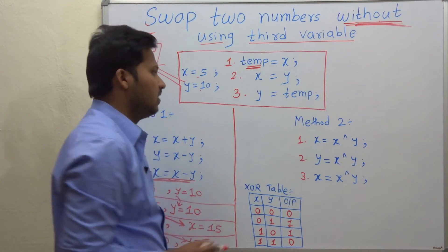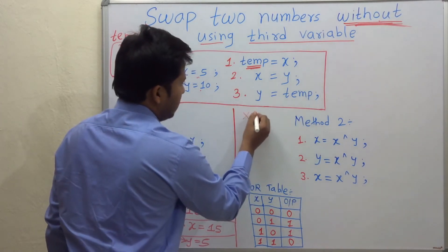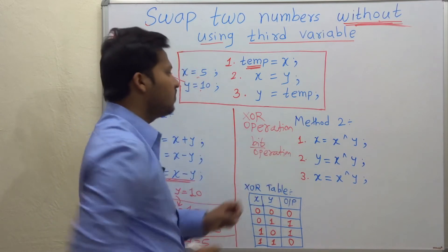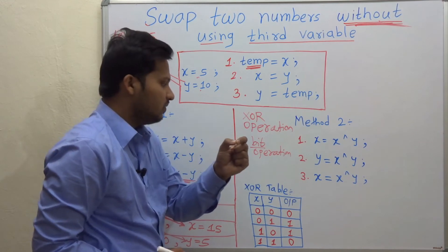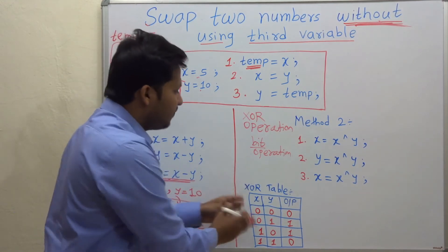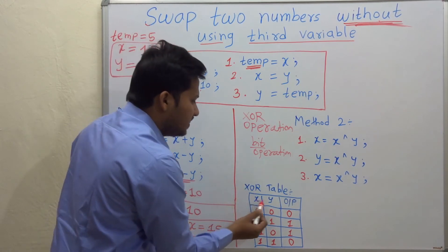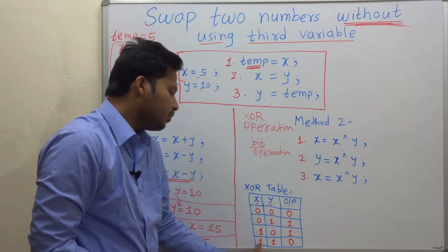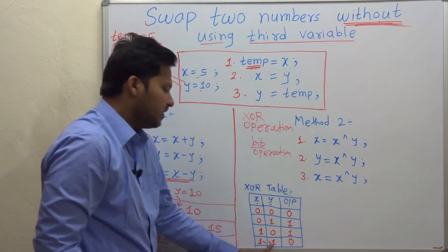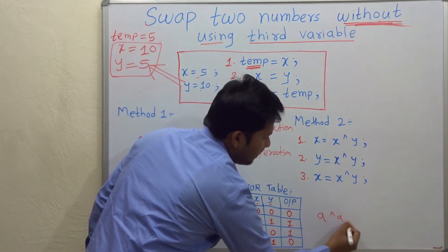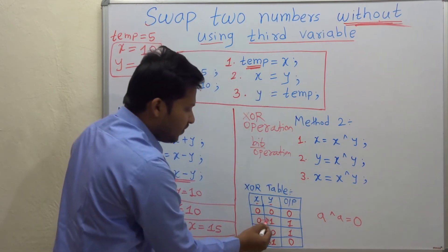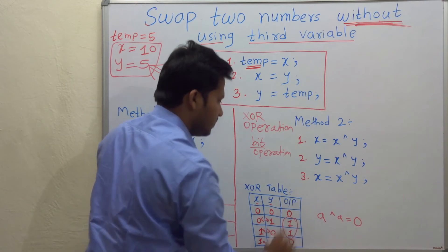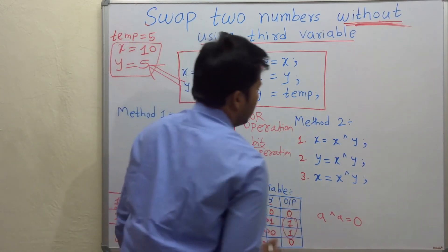Now let's do the second method, which uses the XOR operation. This is a bit operation, and that is why this method is a bit faster for execution. For using this method, we should first know the XOR table. When both inputs are 0 the output is 0, and when both are 1 the output is also 0 — for the same values, the output becomes 0. For two different values — 0,1 or 1,0 — the output is 1.